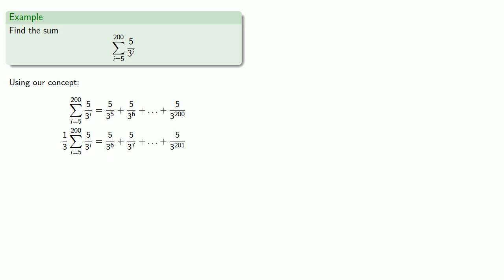If I subtract, everything but the first term of the first series and the last term of the second series is going to cancel out. And so I'll have 2 thirds the sum equaling a difference. And so I know the sum of the series itself.